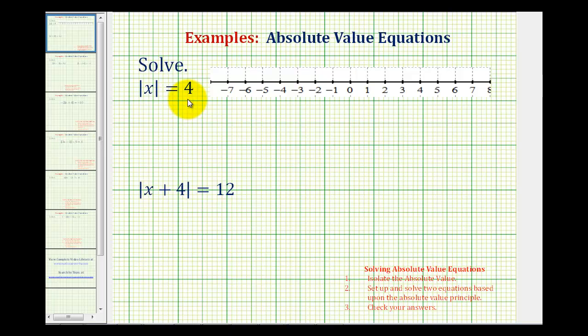Remember the absolute value of a number is a number's distance from 0. So another way of thinking about this equation would be to find the numbers that have a distance from 0 that is equal to 4 units.